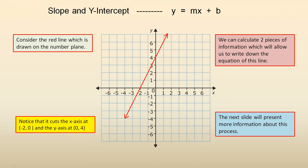Slope and y-intercept, y equals mx plus b. Consider the red line which is drawn on the number plane, that's this line here. Notice it continues infinitely in both directions.